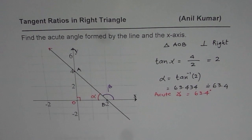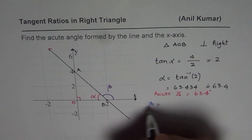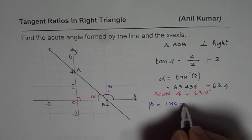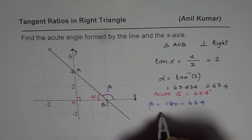Now sometimes we may ask you to find the obtuse angle. In that case what should you do? Once you find the acute angle, you know the obtuse angle beta will be 180 degrees minus 63.4, and then you can write that down.